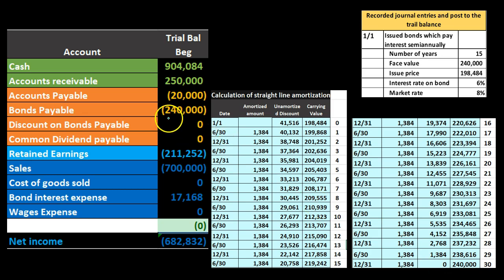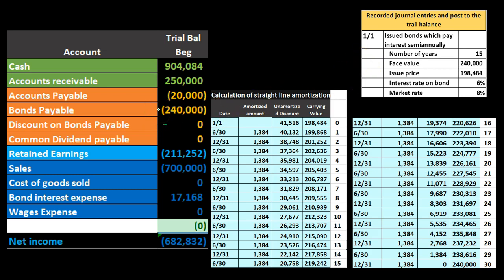By the end of this time period, the discount would be zero and we would only be left with the bond on the books. At the maturity date we would have something like this on our trial balance: the discount is now zero and the bond is on the books at $240,000, which is the face amount. If it were a premium, the same thing — the premium would be gone to zero.